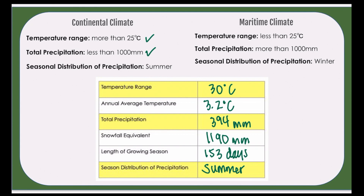For our seasonal distribution, continental would be summer and maritime would be winter. In maritime locations, they tend to have more precipitation in their winter months. For our location, this one favored summer, so we have three out of three denoting that this is a continental climate. Now, if you do run into a situation where your temperature range is spot on to 25 degrees Celsius, then you would just go with your two out of three — if the other two line up with continental, go with continental, or if they line up with maritime, go with maritime.